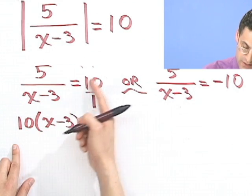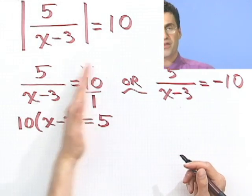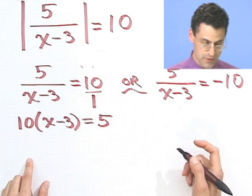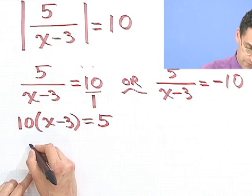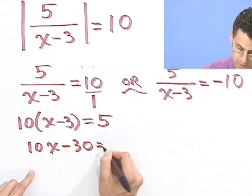That will equal this product here. Another thing you could do is multiply everything through by the quantity x minus 3, and you'd get the exact same answer and cancel here. And then what would we have? We'd have 10x minus 30 equals 5.